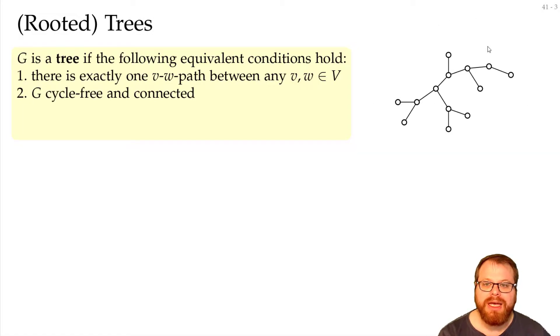Second is, the graph is cycle-free and it is connected. Third is, the graph is cycle-free and we have exactly n minus 1 edges. And the fourth is, the graph is connected and we have exactly n minus 1 edges. So these three here are very similar, these are just three properties. Any two of those immediately gives you a tree.